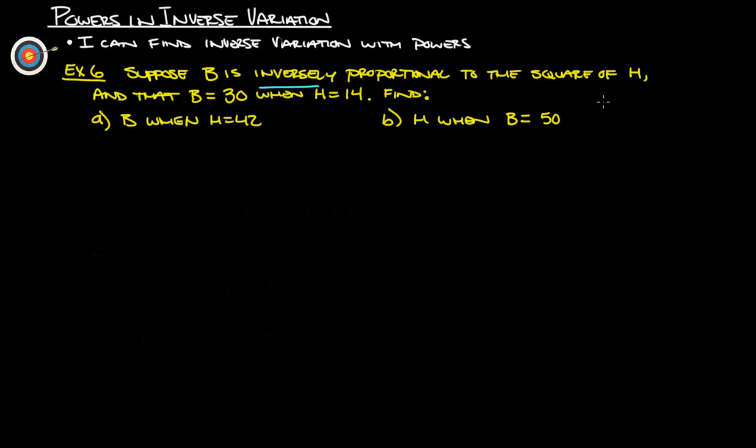B is inversely proportional to the square of H. So we've got B, and then we've got H squared, but it's inversely proportional, so it's going to be 1 over H squared. This is going to be our key right here. B is inversely proportional to 1 over H squared. Now with that, let's do our H here and our B here.